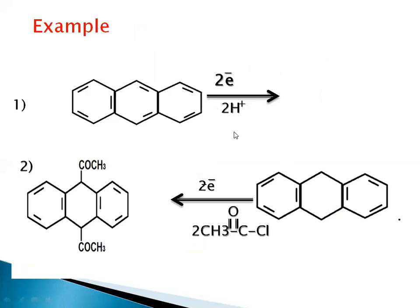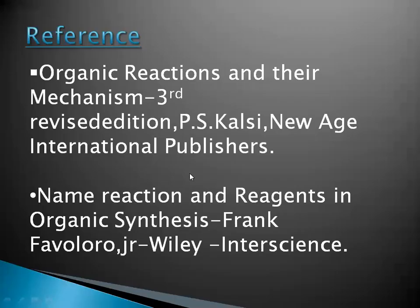After addition of two electrons, the double bond of the middle ring is reduced and we get a reduced compound. If we then add acetyl chloride, the two acetyl chloride molecules attack the carbon atoms at positions 9 and 10, which are the most reactive positions in anthracene. All reactions take place at these positions, so acetyl chloride reacts at that position.